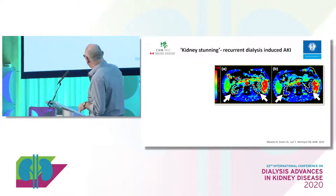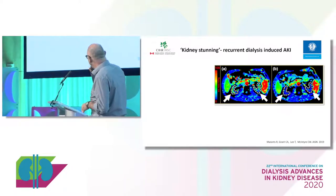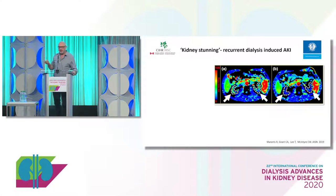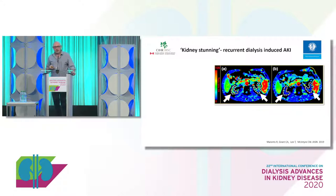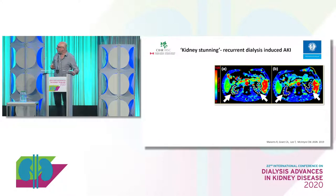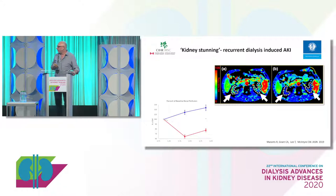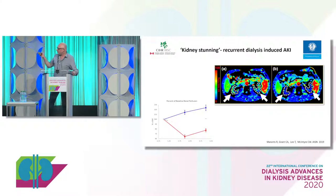Here we have perfusion CT scanning — the dotted lines are where the kidneys are. Red and yellow indicate lots of blood flow; blue is no blood flow at all. At rest, there is still some blood flow to these remnant kidneys. After three hours of dialysis — no blood flow at all. Just as with the hearts, about a third of people didn't stun their kidneys — that's the blue line. The red line shows those who did, with significant reductions.